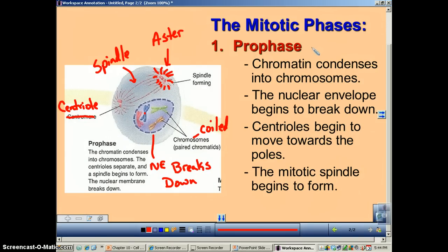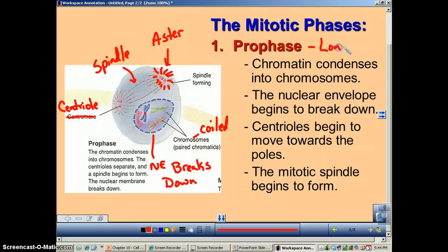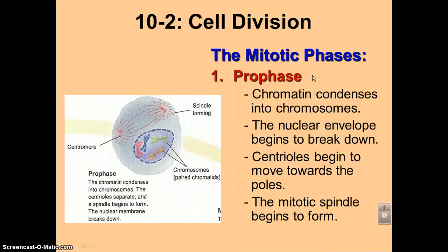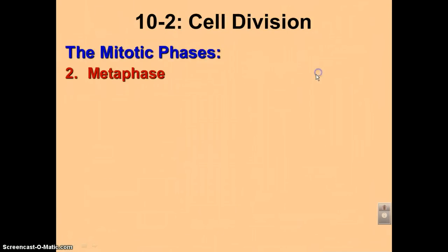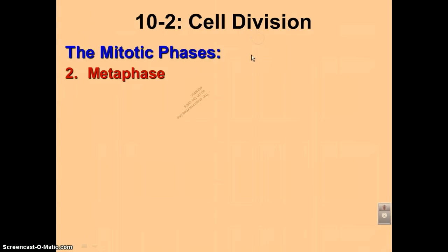Those are the four things that happen during prophase. Prophase is actually the longest of the four phases because there's a lot of things that have to get done here. Next we're going to move on to one of the relatively shortest ones, called metaphase.